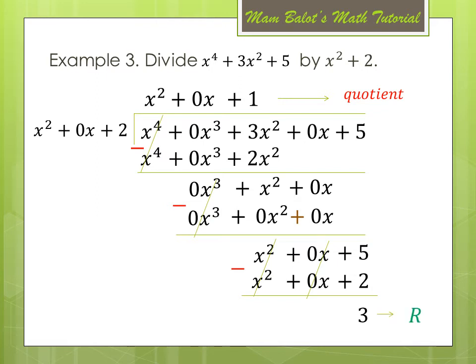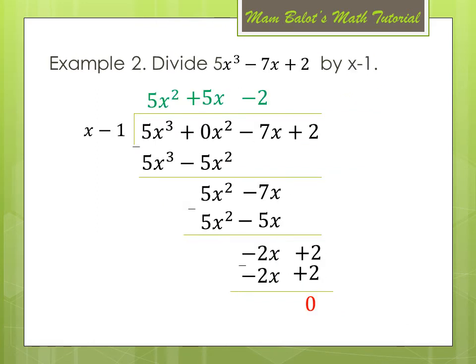If you observe, the long division method is tedious because of so many variables, where in fact we already know that the variables are always arranged in decreasing power. So we will now derive a shortcut method for dividing our polynomials. We will use our previous example to derive this shortcut method — example number 2.